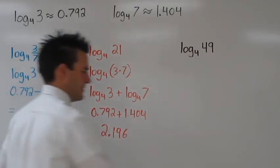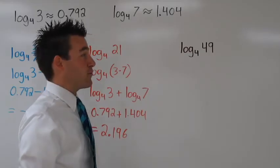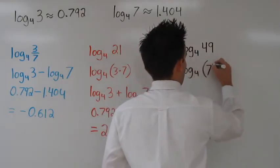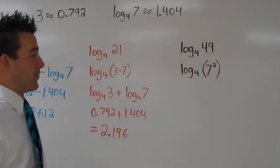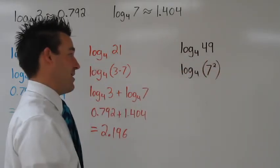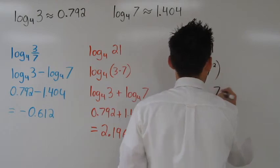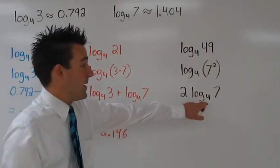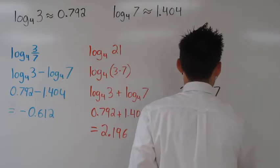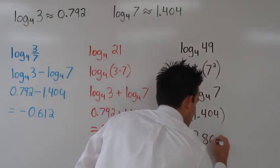Now let's look at the last one. Here our challenge is to find log base 4 of 49. Well, if we rewrite 49 as 7 squared, we can use the power property. The power property allows us to bring the exponent to the front as a multiplier or a coefficient of the log. So now we have 2 times log base 4 of 7. We know what log base 4 of 7 is, so let's substitute in that value. 2 times 1.404 is just 2.808.